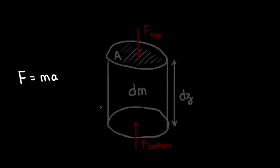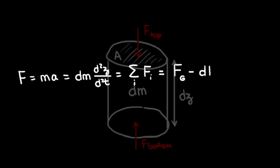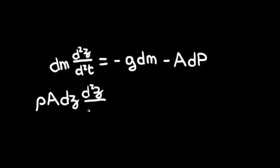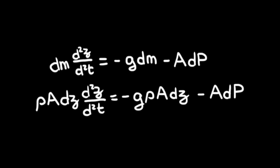The total forces applied on the cylinder can be written as follows: force is mass times acceleration, equal to the sum of all forces applied to the cylinder. In this case, the mass is dm and the acceleration is the second derivative over distance z. The total forces applied are gravity and atmospheric pressure. Pressure is force divided by area. We also know that a small mass dm is equal to the density of the cylinder times its volume, which is the base area times the height. Plugging this in and dividing by surface area A to simplify gives us our working equation.